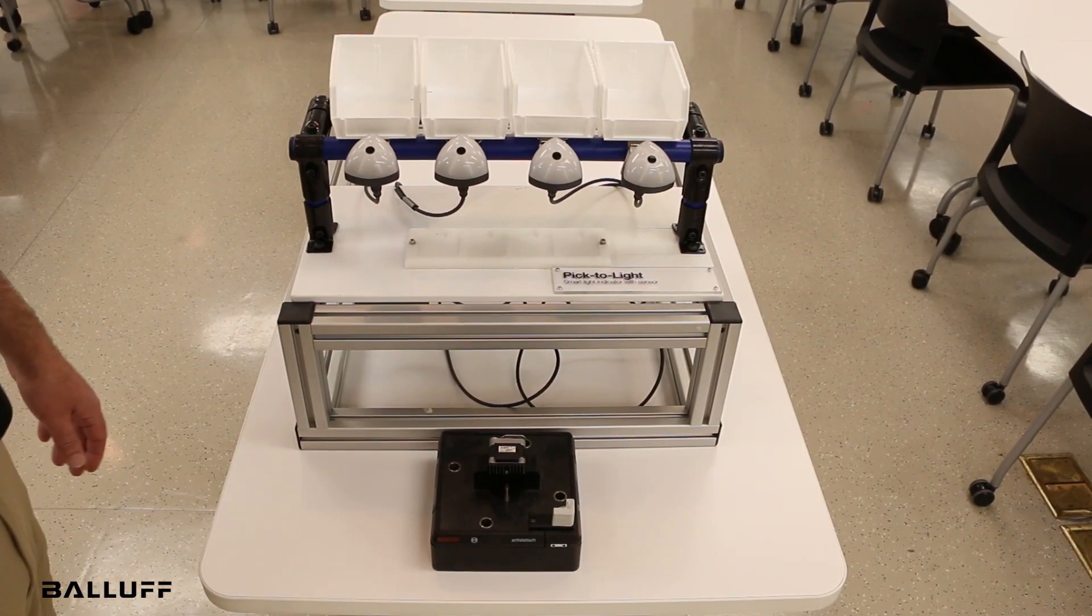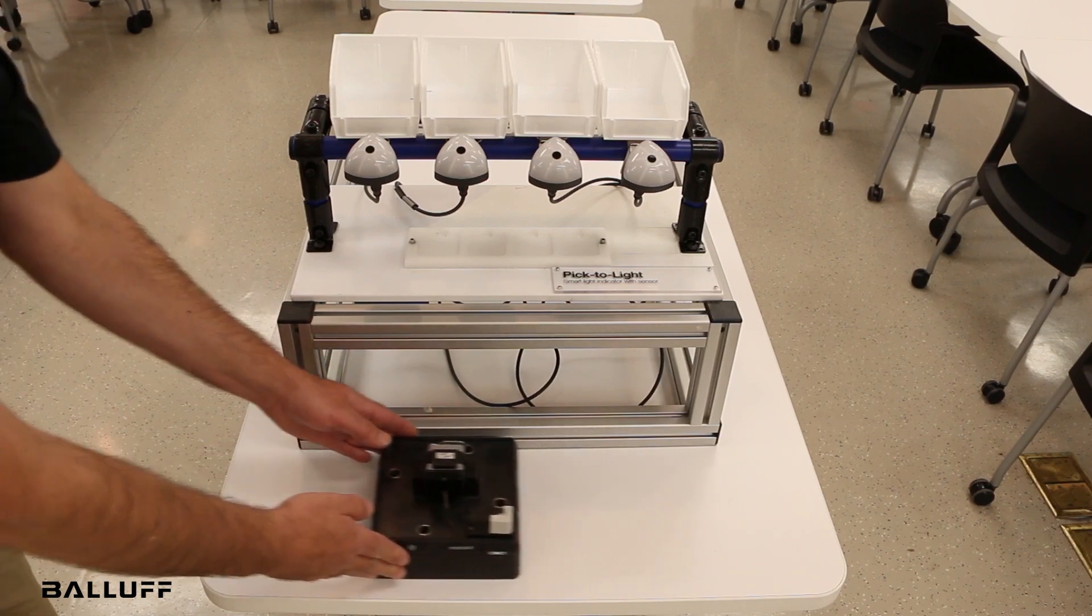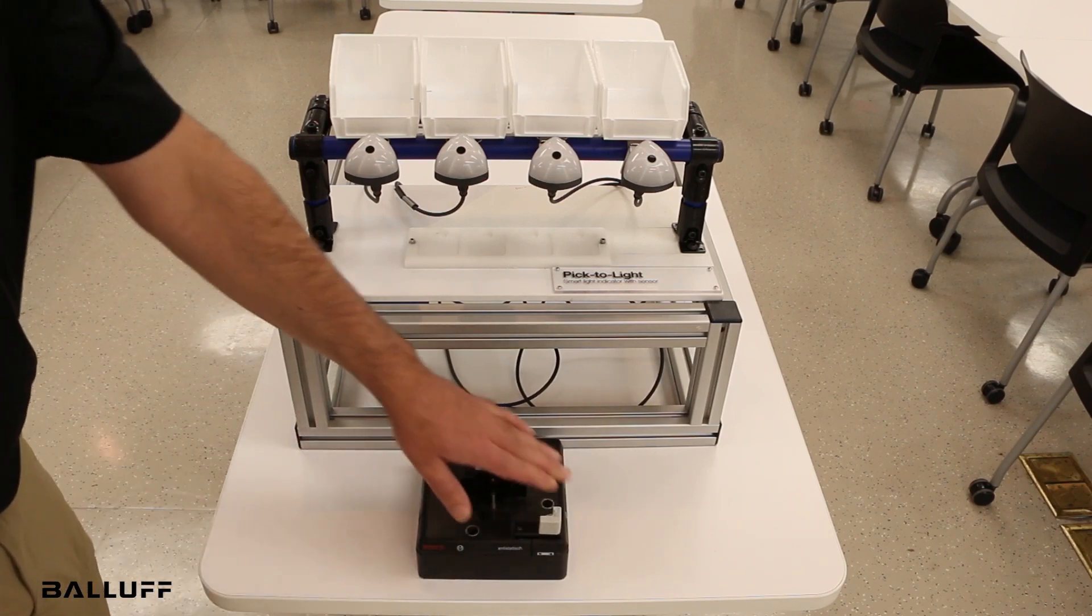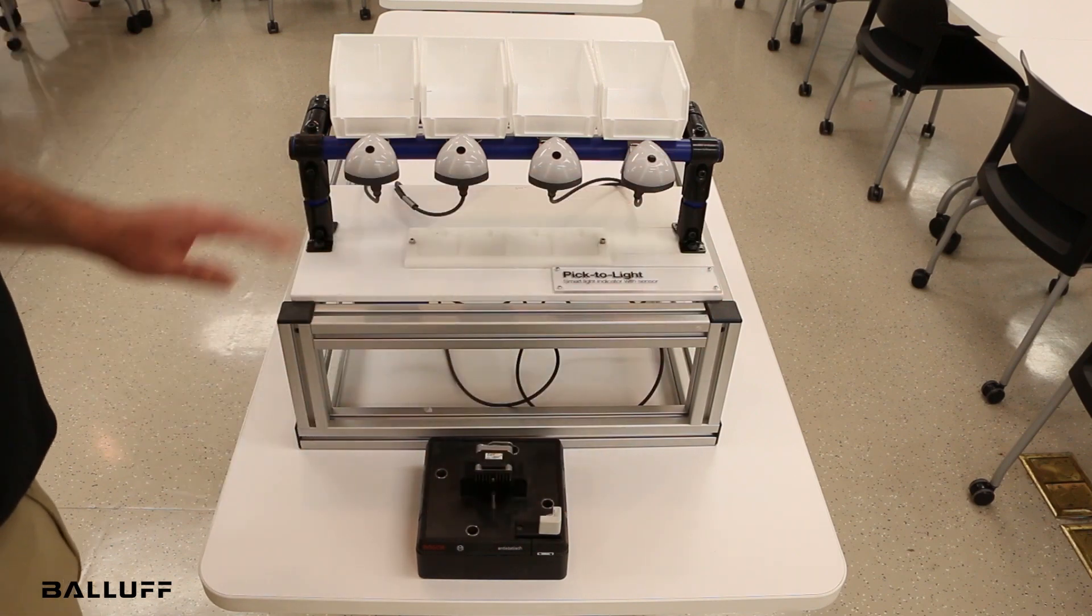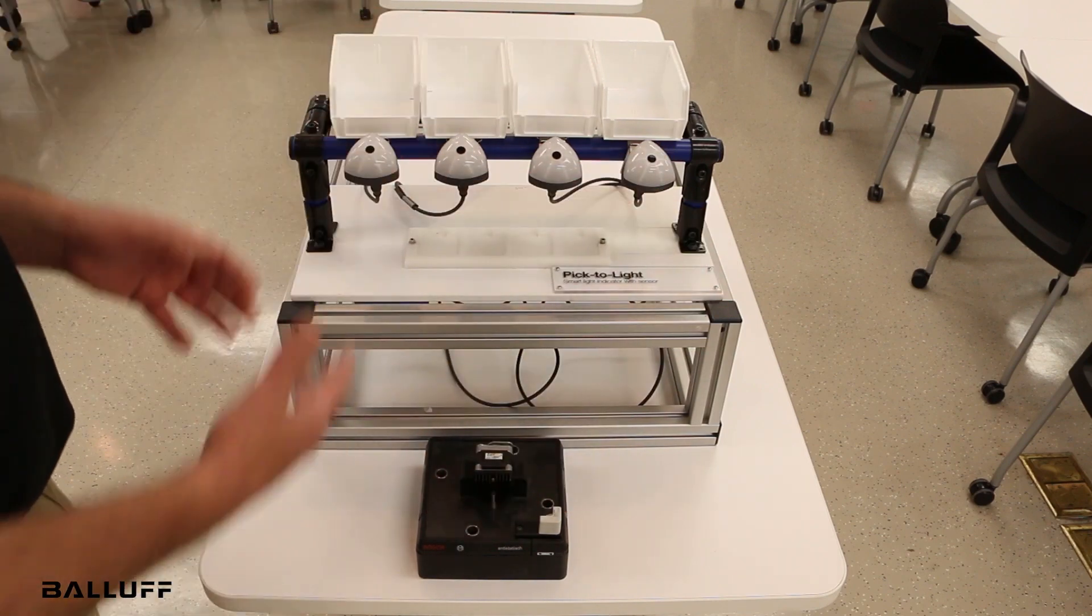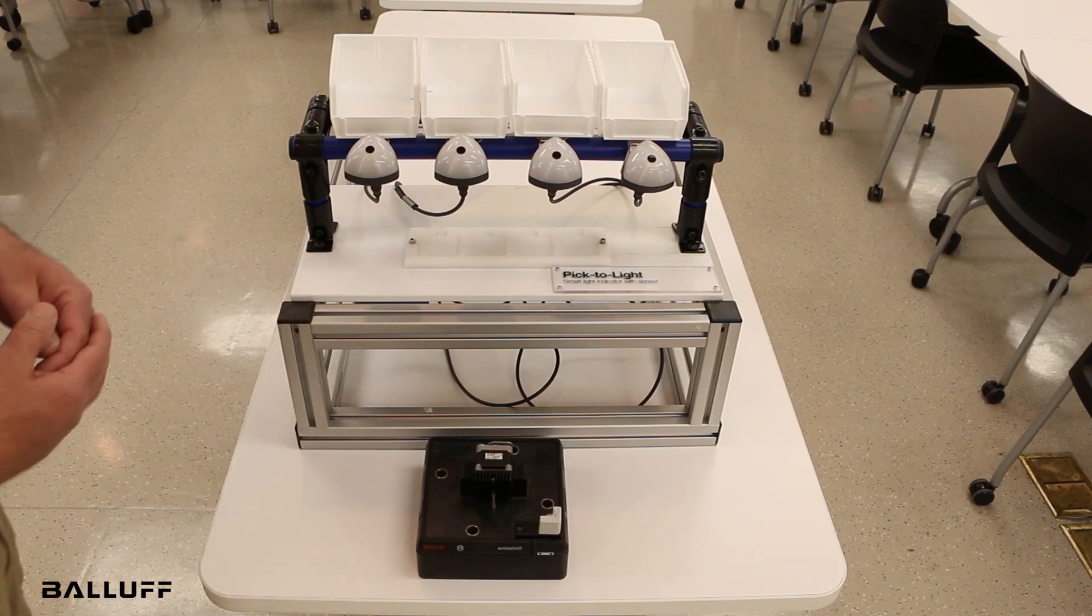In this application, this is more for assembly. So in this case we have a build pallet coming into station. Here we're building a motor. RFID would be read similar to what you saw in the other demo. And here you have much smaller bins to pick some of the smaller pieces and assemble this, in this case, this particular motor.